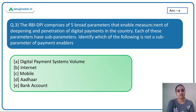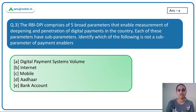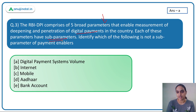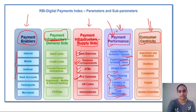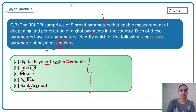The third question: the RBI Digital Payments Index comprises five broad parameters. Each has sub-parameters — which of the following is NOT a sub-parameter of Payment Enablers? Among the options, 'digital payment systems volume' is not a Payment Enabler — it is a sub-parameter of Payment Performance. So the answer is option A.